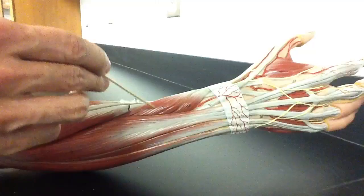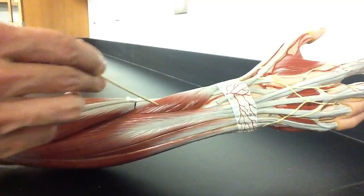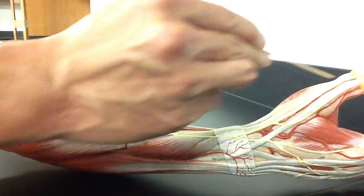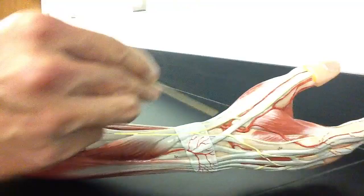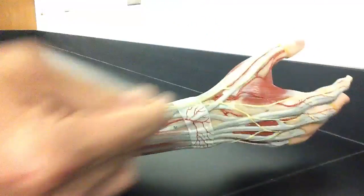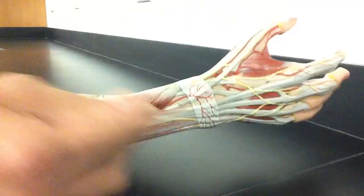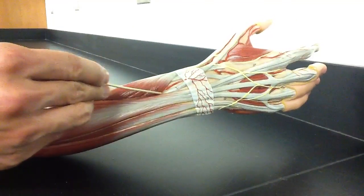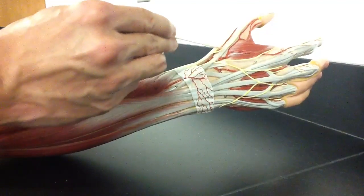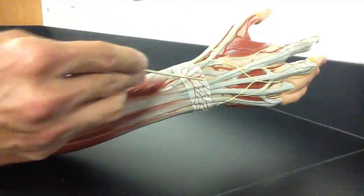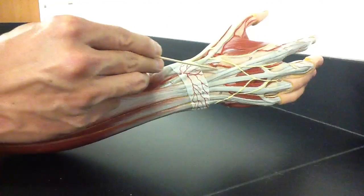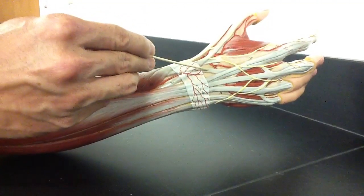This is called the abductor pollicis longus. Abductor pollicis longus. Notice it's the first one going to the closest to the palmar side of the thumb. Then it's the extensor pollicis brevis. This one that you can't really see the muscle belly but we can see its tendon is the extensor pollicis longus. And then the last one is this muscle that goes up to the index finger. We call it the extensor indicis.